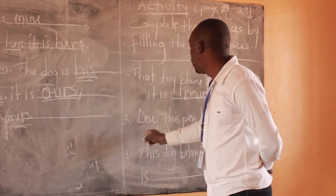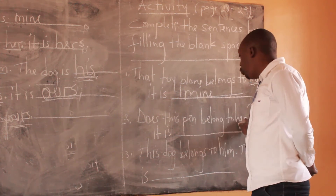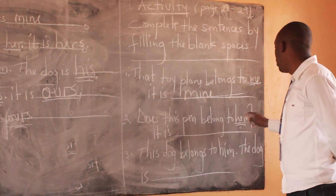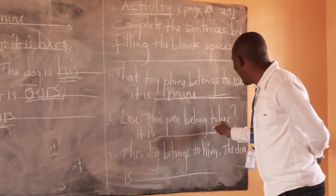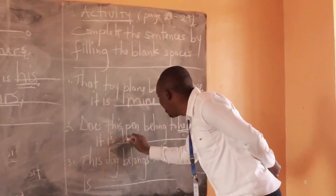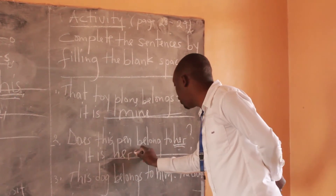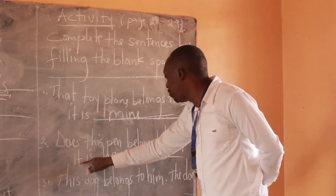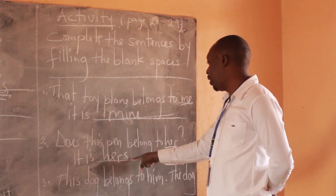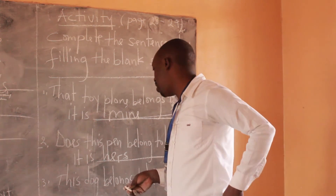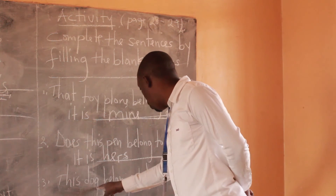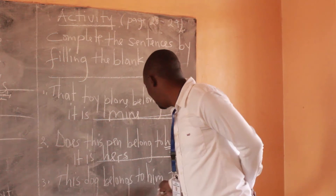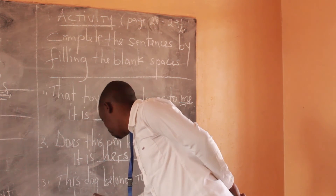Number two: does this pen belong to her? This her is in this sentence as object pronoun. Her equals to hers when we use possessive pronouns. So we can say: it is hers. If a pen belongs to her, then it is hers. Number three: this dog belongs to him. If the dog belongs to him, then it is his — the dog is his.